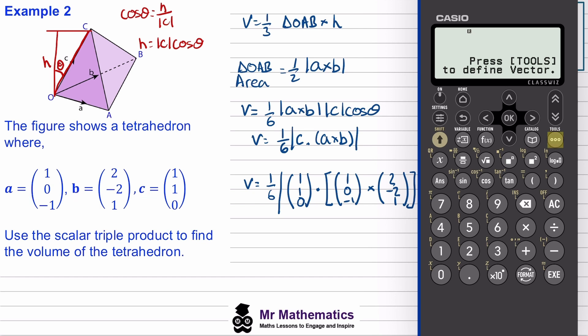So we'll select two alps. I'll define this one as vector A, vector B, and vector C. First vector A, with components one, zero, negative one, we'll execute that.